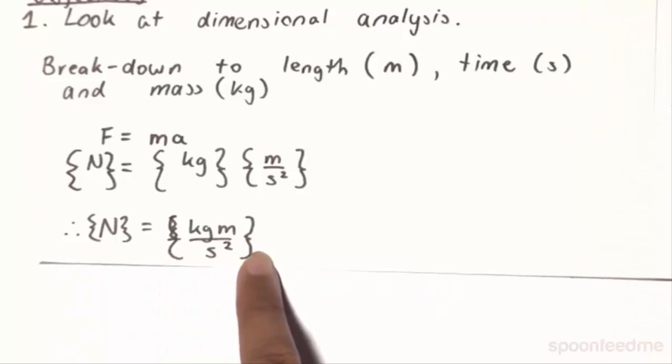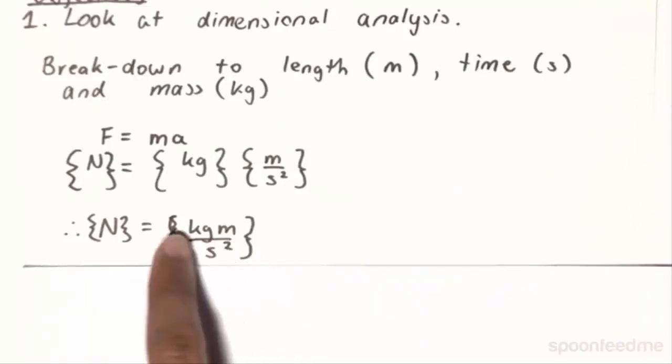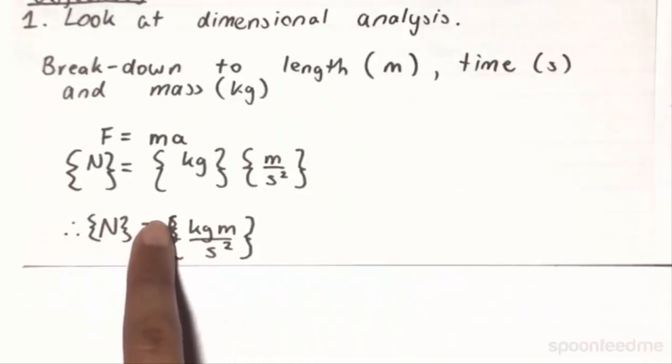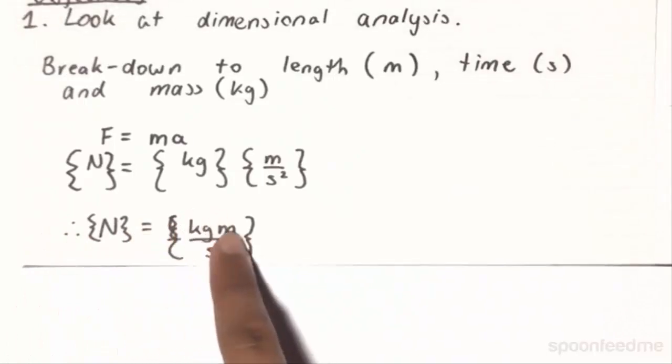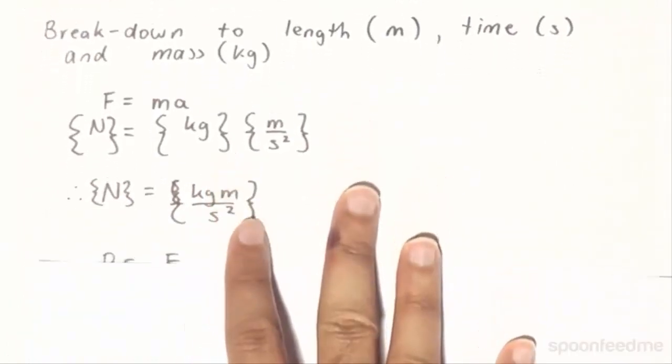So essentially, if you wanted to denote the force of an object, you can use, say for example, 50 newtons, or you could use 50 kilogram meters per second squared, as they are equivalent terms.